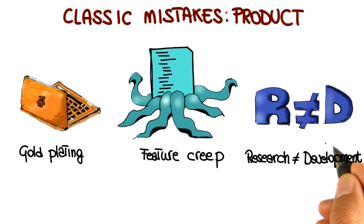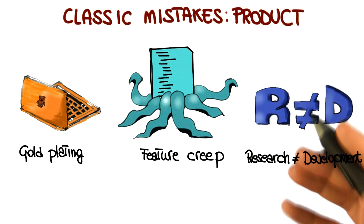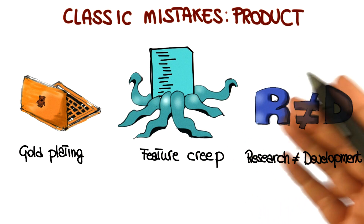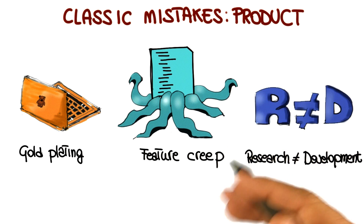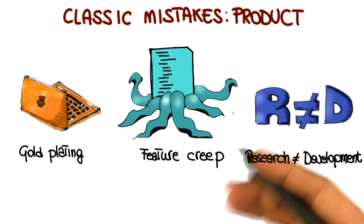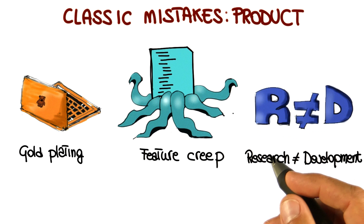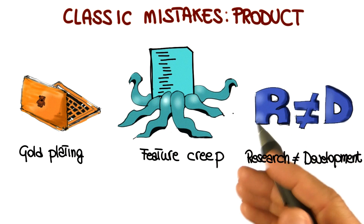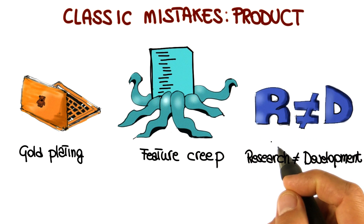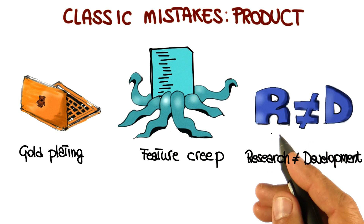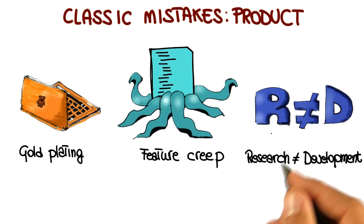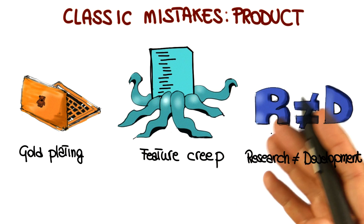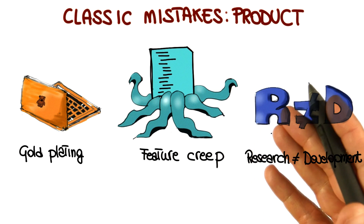Finally, if you're working on a project that strains the limits of computer science — for example, because you need to develop new algorithms or use new techniques — then that project might be more research than actual development, and therefore should be managed accordingly, for example by taking into account that it will have a highly unpredictable schedule.